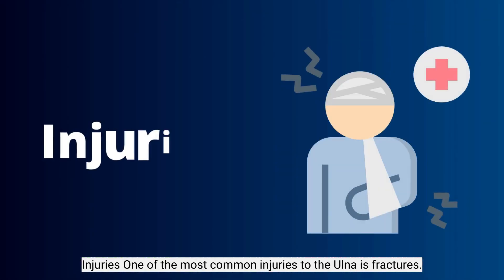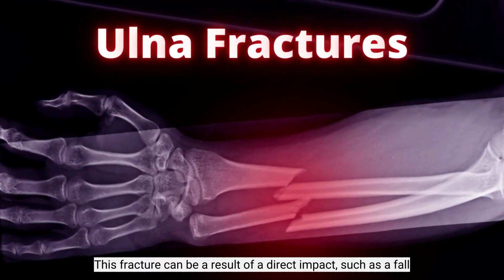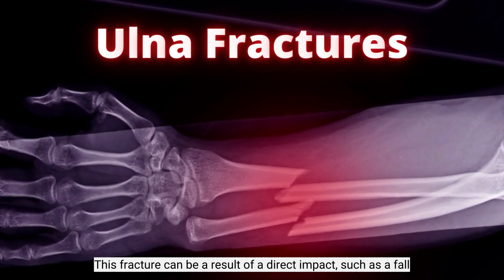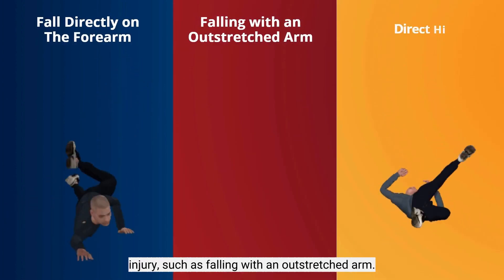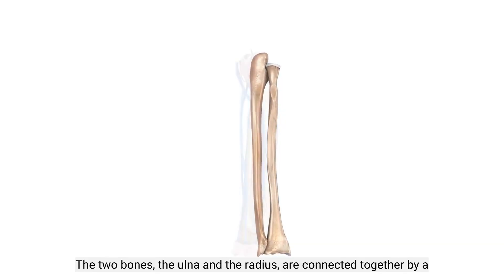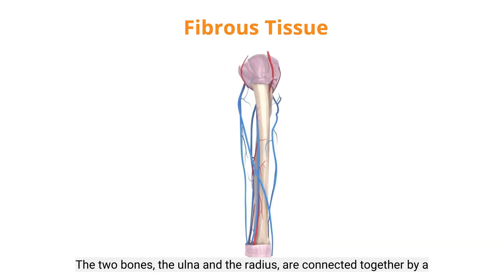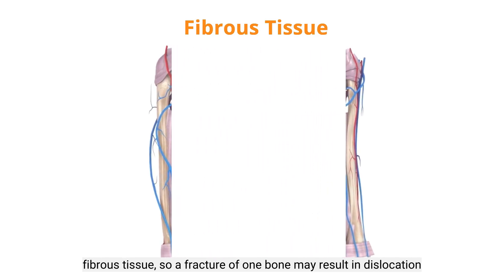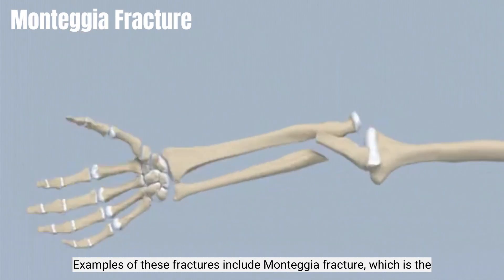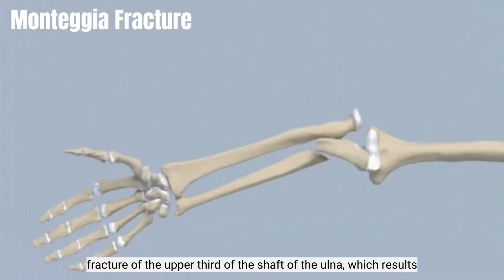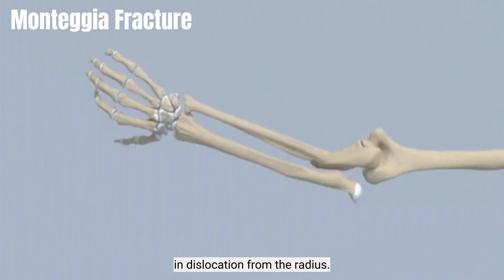Injuries. One of the most common injuries to the ulna is fractures. A fracture can be the result of a direct impact such as a fall directly on the forearm or a direct hit by an object, or an indirect injury such as falling with an outstretched arm. The two bones, the ulna and the radius, are connected together by a fibrous tissue, so a fracture of one bone may result in dislocation or separation from the other. Examples include Monteggia fracture, which is a fracture of the upper third of the shaft of the ulna, resulting in dislocation from the radius.